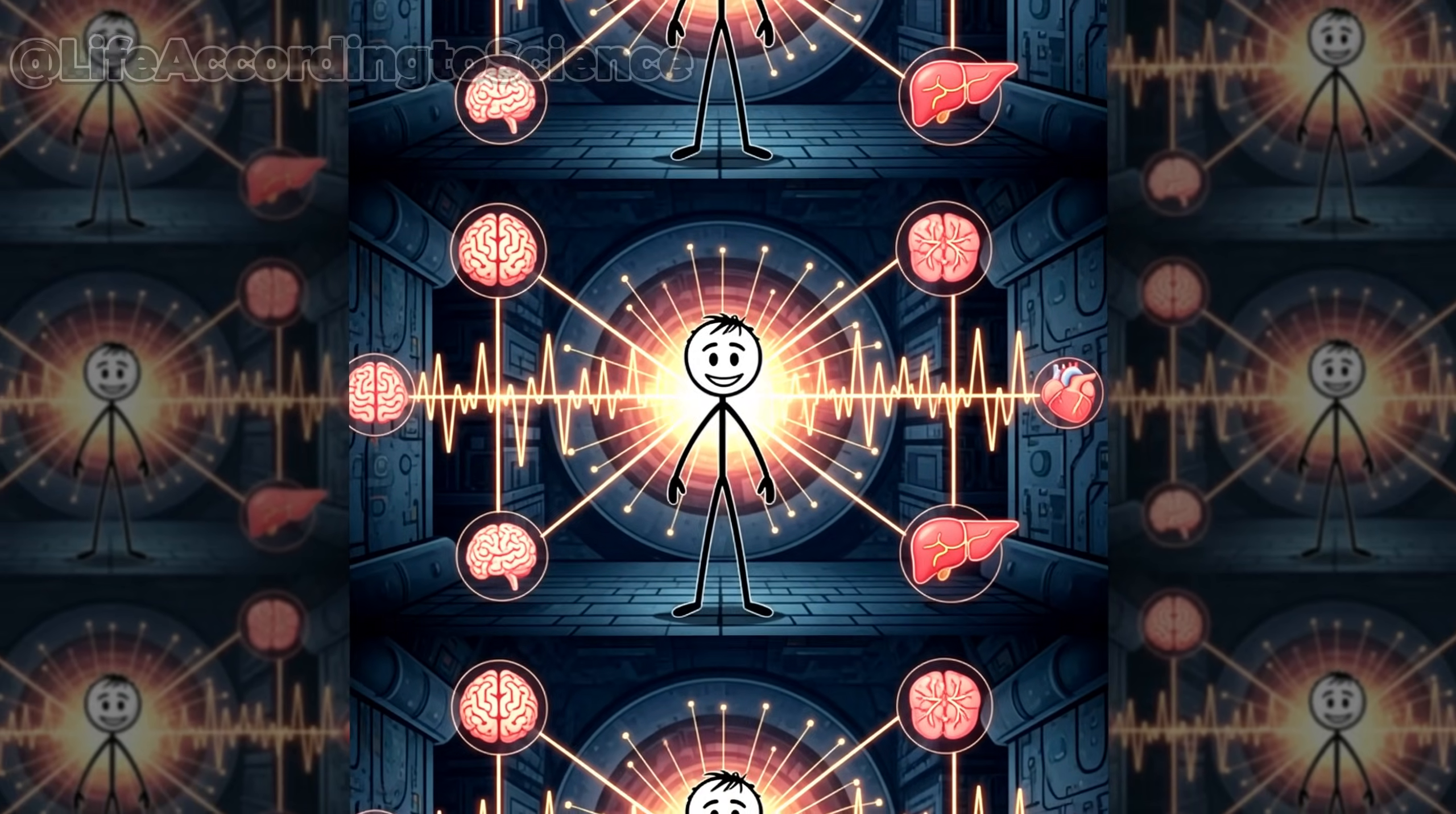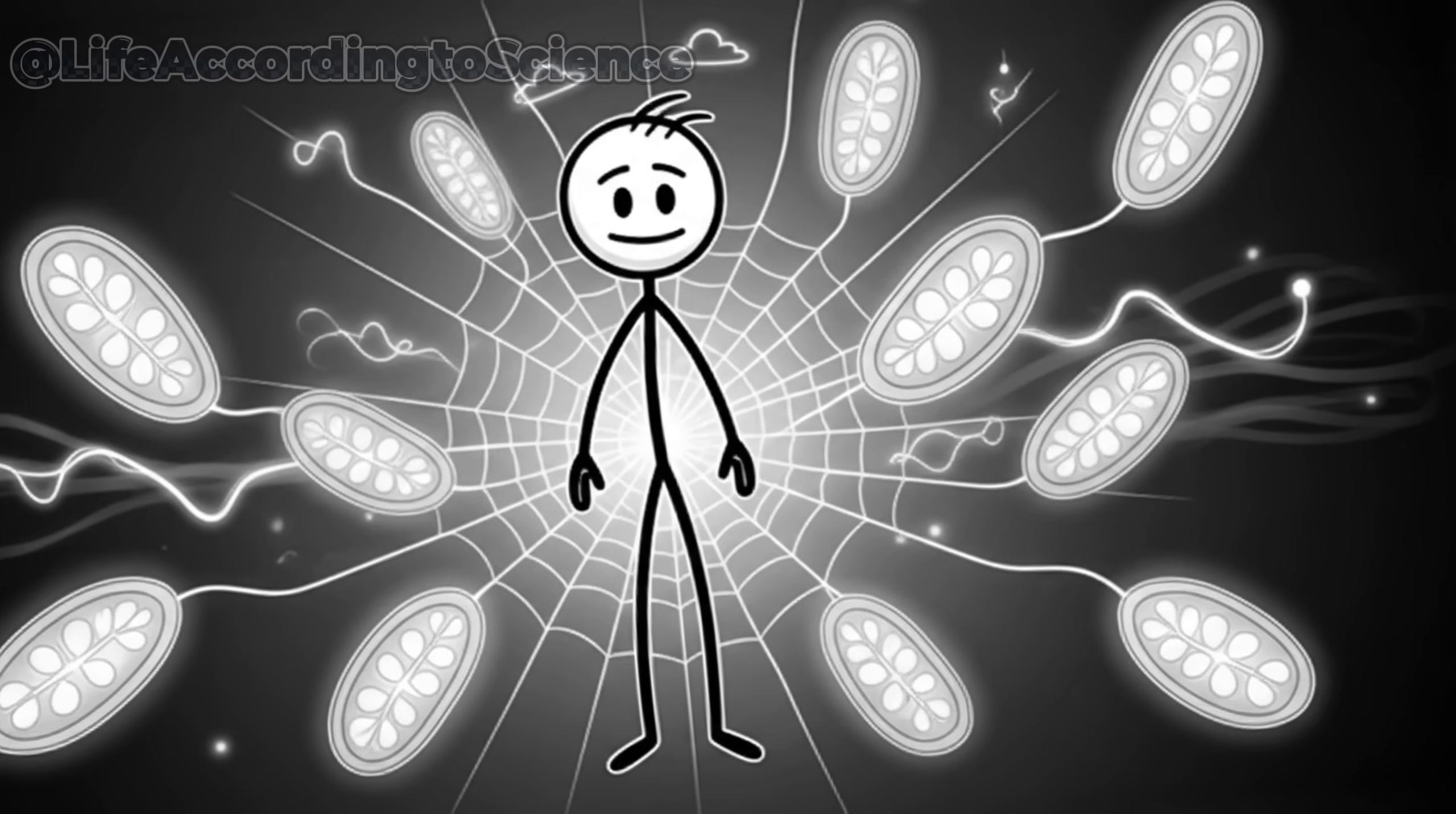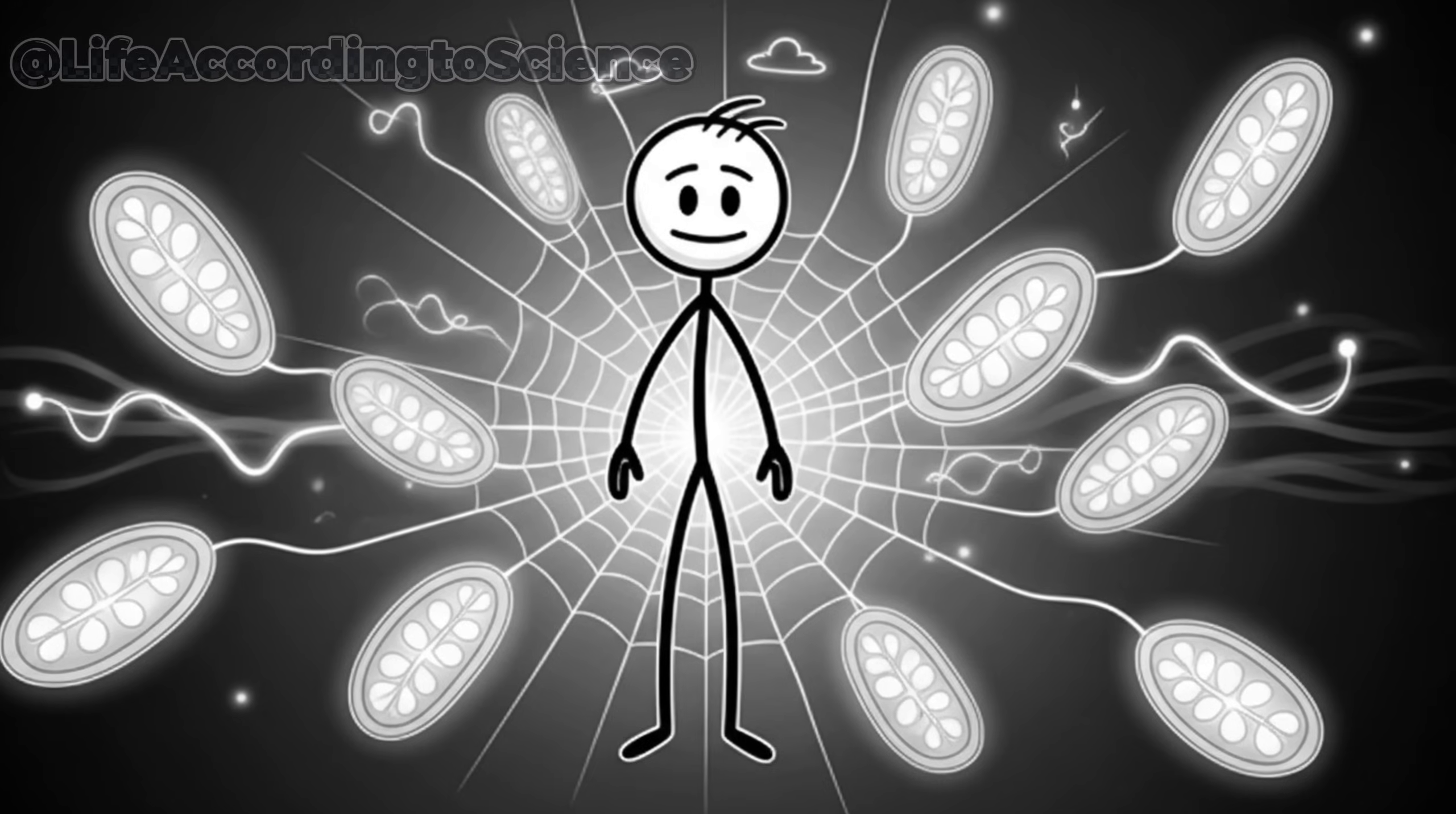Every organ now cooperates in a perfectly orchestrated system designed for endurance. This phase also lowers insulin resistance and reprograms metabolism to favor longevity. People who fast periodically show improved mitochondrial density, meaning they literally grow more energy engines inside their cells.